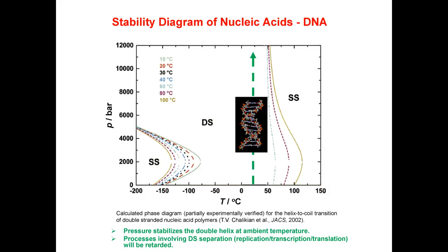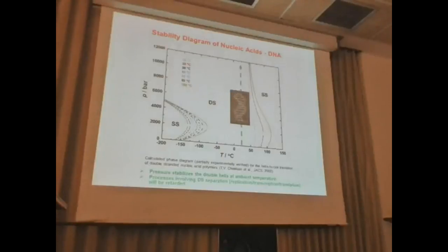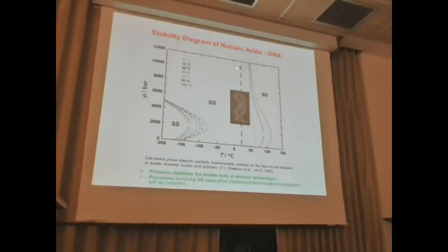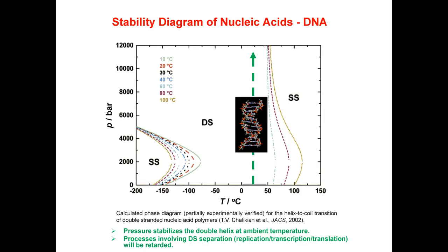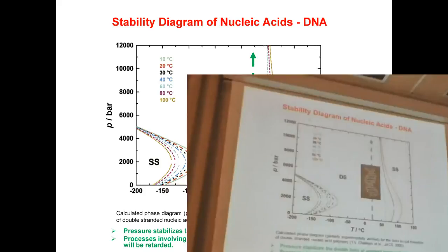Let's look at some biosystems. First, the DNA phase diagram: pressure versus temperature. In the double-helical native state, DNA can be melted at high temperature but also at low temperature. Under ambient pressure conditions, nothing happens to DNA even up to 10 kilobars — our DNA is very stable because it is very densely packed and strongly hydrated.